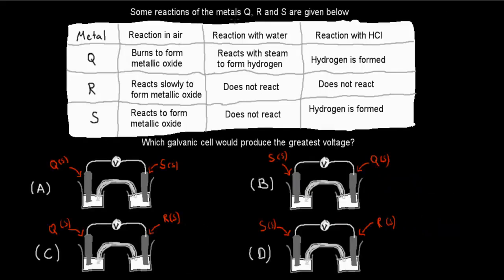The next question: some reactions of metals Q, R, and S are given. In air: Q burns to form metallic oxide, R reacts slowly to form metallic oxide, S reacts to form metallic oxide. In water: Q reacts with steam to form hydrogen, R does not react, S does not react. In hydrochloric acid: Q forms hydrogen, R does not react, S forms hydrogen. Which galvanic cell combination produces the greatest voltage?